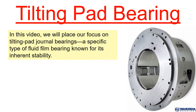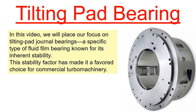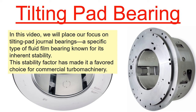In this video, we'll place our focus on tilting pad journal bearings, a specific type of fluid film bearings known for its inherent stability. This stability factor has made it a favored choice for commercial turbo machines.